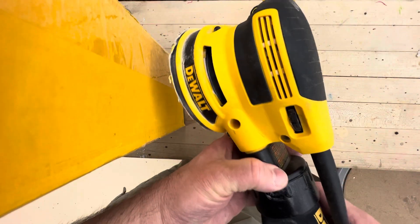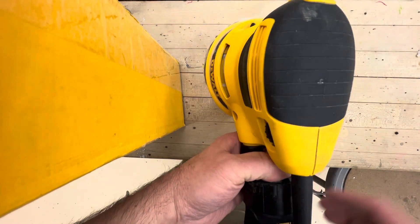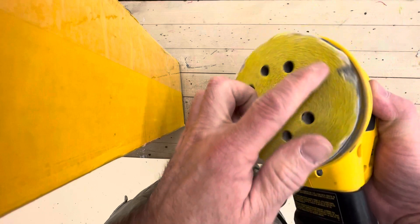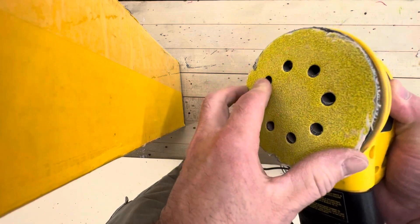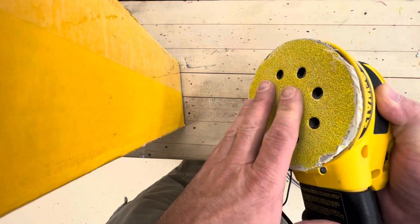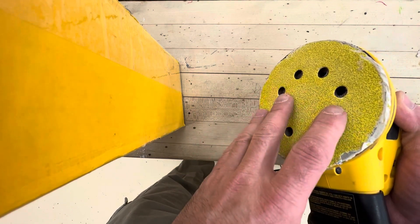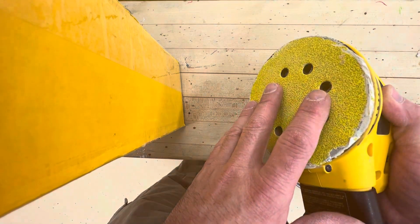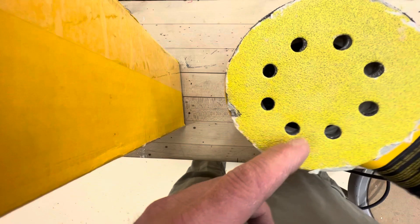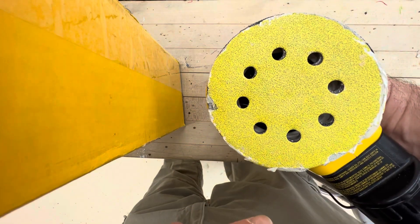Here we have our DeWalt sanders. These are called random orbital sanders. The disc is going to spin and move back and forth at the same time so it will leave no patterns. What's nice about it is if you touch it while it's moving like it's supposed to, it should not hurt you. It should not spin really fast.